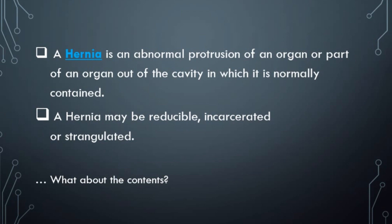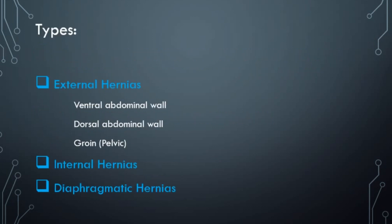Regarding the contents, they can vary — fat, mesentery, any bowel, stomach, pretty much anything. Regarding the types, we have external hernias: ventral or anterior abdominal wall hernias, dorsal or posterior abdominal wall hernias, and groin or pelvic hernias. We also have internal hernias and diaphragmatic hernias. Diaphragmatic hernias I won't cover since we covered them in the chest part.